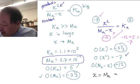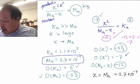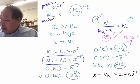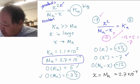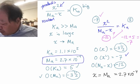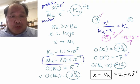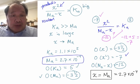Therefore X is 2.7 times 10 to the minus fourth. We see that in the scenario when Ka is much much larger than Ma, we have the very great simplification of the original ice table equation: just that X equals Ma. That is true when Ka is much much larger than Ma.